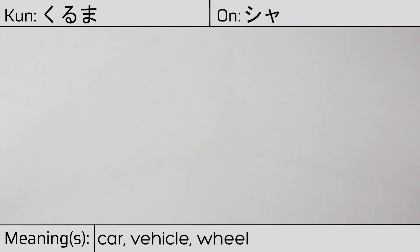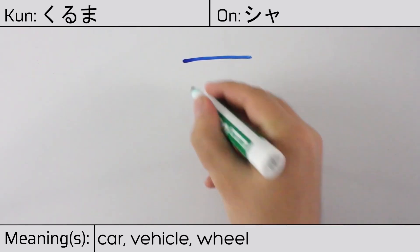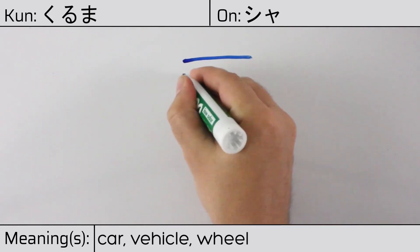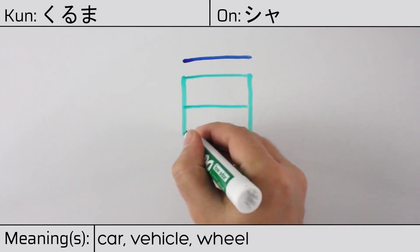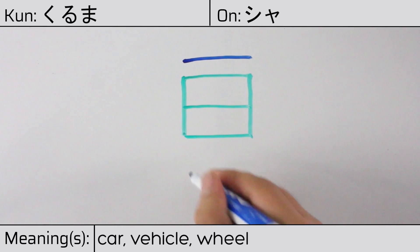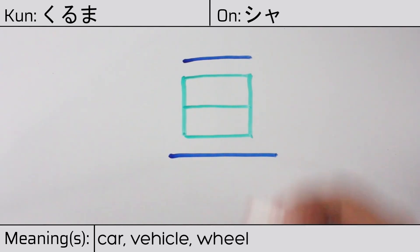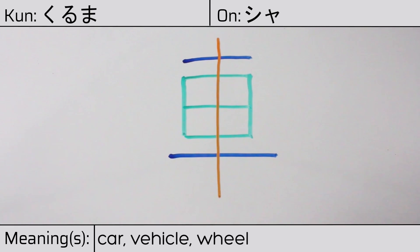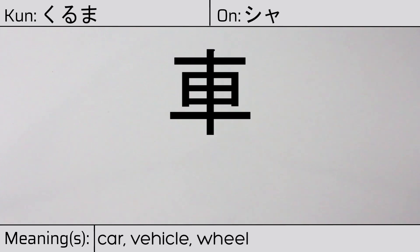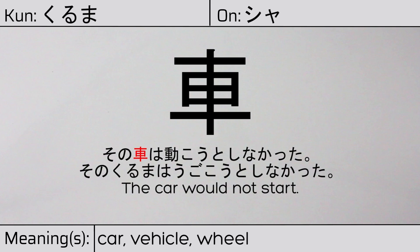This character is made up of the following radicals or parts: kanji ichi, the kanji meaning sun or day in the middle, kanji ichi, and finally a vertical stroke through the center. You can remember this kanji by thinking of it as looking like a car or a chariot. Our example sentence is: The car would not start.